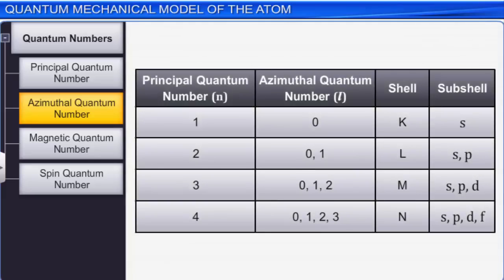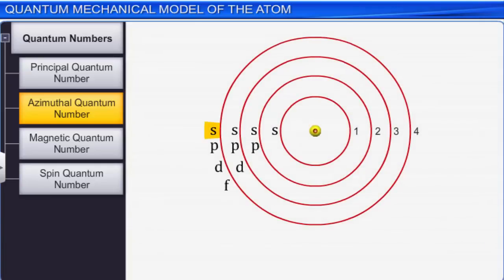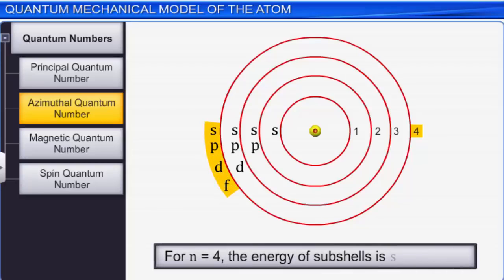Thus, the sub-shells in the K shell (n = 1) is S; in the L shell (n = 2) are S, P; in the M shell (n = 3) are S, P, D; and in the N shell (n = 4) are S, P, D, F, and so on. The S sub-shell has the lowest energy, and the energies of the sub-shells within the same principal shell follow the order: S < P < D < F.